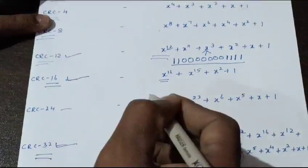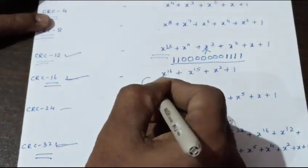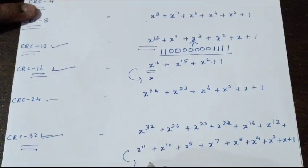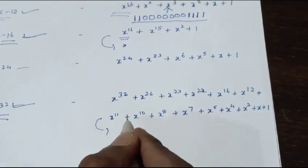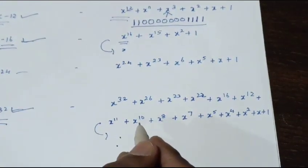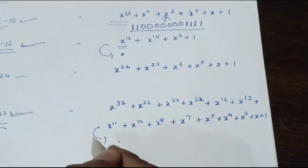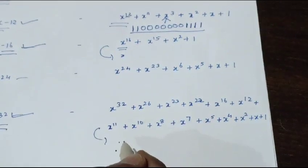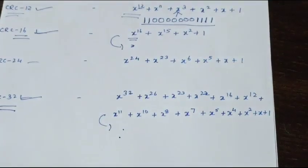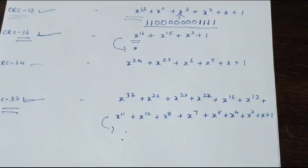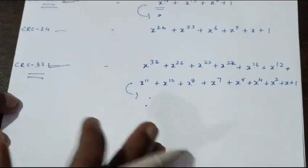Based on the application, these polynomials can change. Depending upon the type of application we are using, suitable CRC code can be used. This is the list of standard generated polynomials.